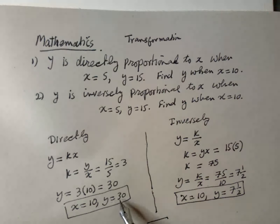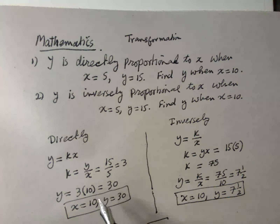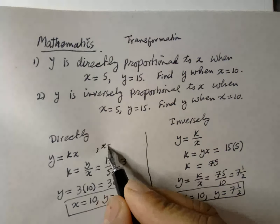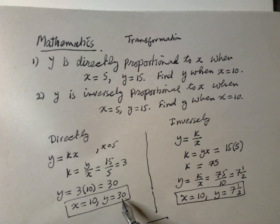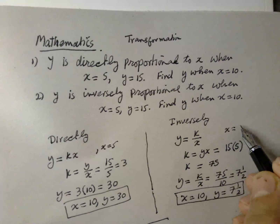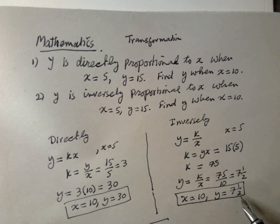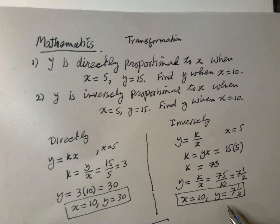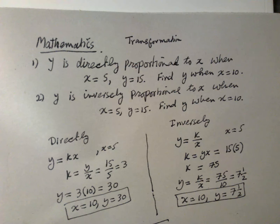So in here, y is increasing when x increased from x equal to 5 to 10 — it's increasing. When x goes from 5 to 10 in the inverse case, y is decreased. So the first is directly proportional, and the second is inversely proportional. Thank you.